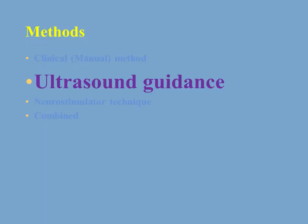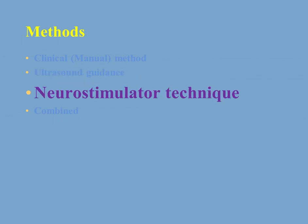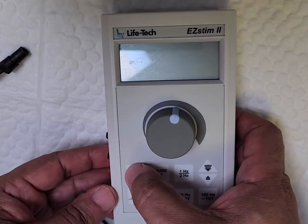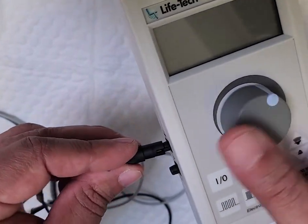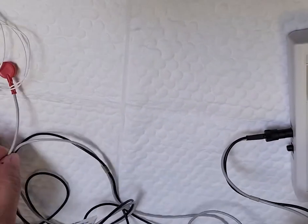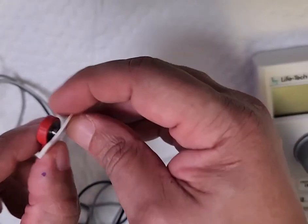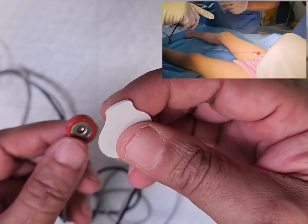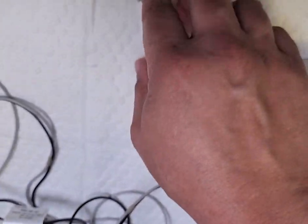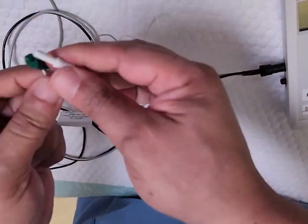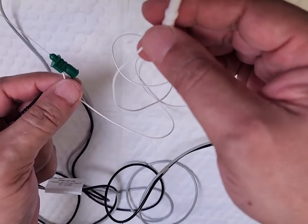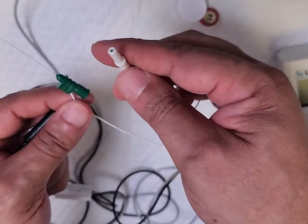The problem with the ultrasound guidance method is the difficulty in identifying small muscles when they are compacted together, as in the forearm. That's why the neurostimulator method has an extra advantage. In this method, we use a neuromuscular stimulator — there are many commercially available, like this one from Lifetech. It has two electrodes: the red one attaches to an ECG sticker on the child's skin, and the other electrode attaches to a special needle used both to stimulate the muscle and to inject the botox.